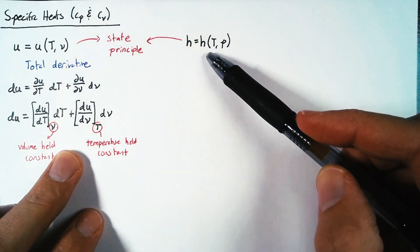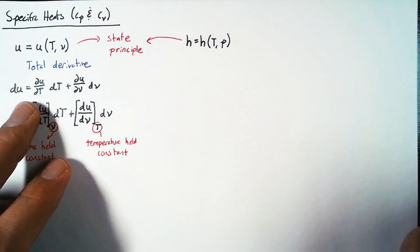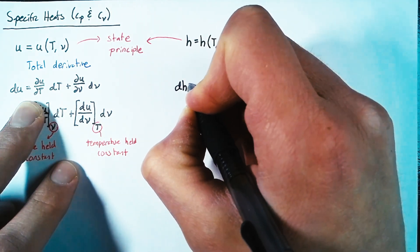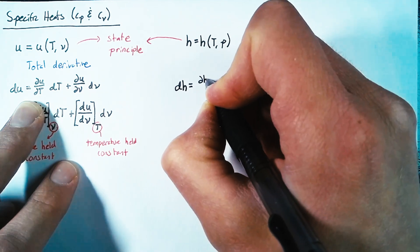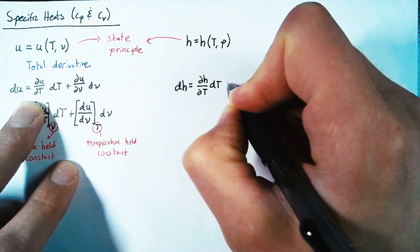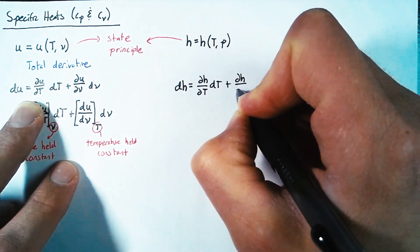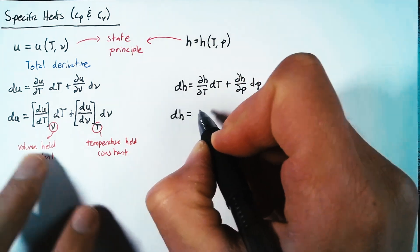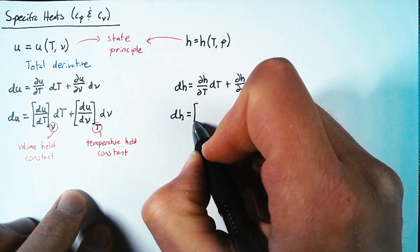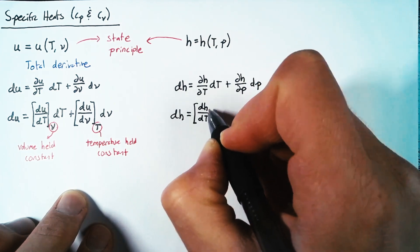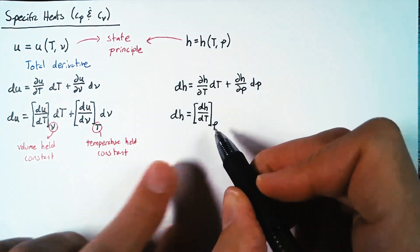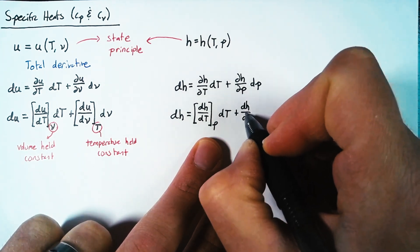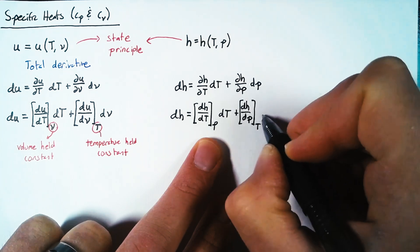Now we're going to do the exact same thing for H. Just like with U, we take the total derivative and get that dH is equal to the partial of H with respect to T times dT, plus the partial of H with respect to P times dP. Then we reorganize that the same way we did with dU: this becomes dH/dT with pressure held constant — since H was a function of T and P — plus dH/dP with temperature held constant.